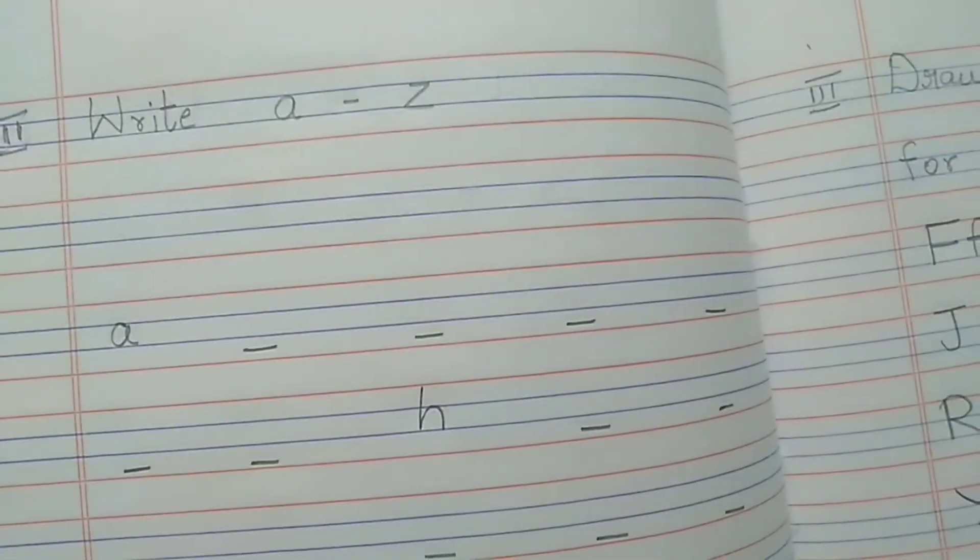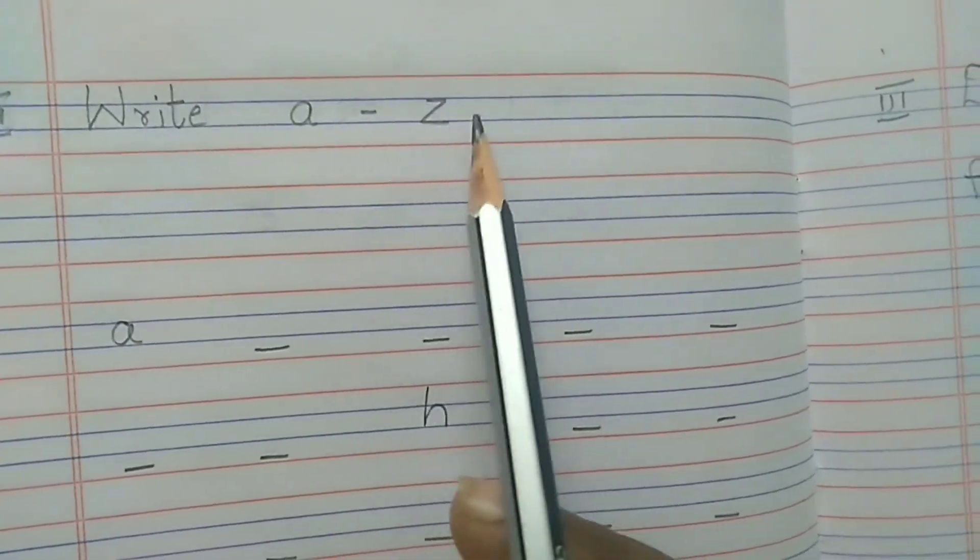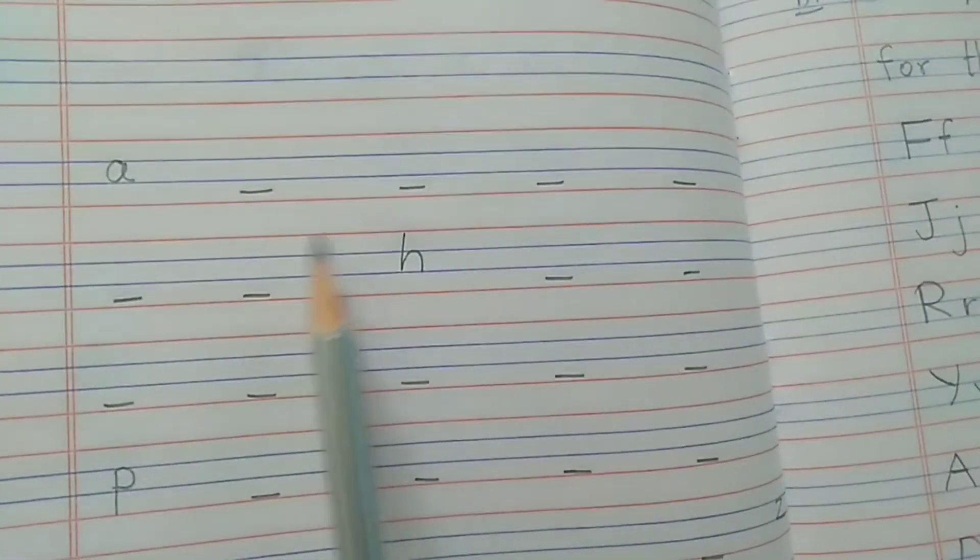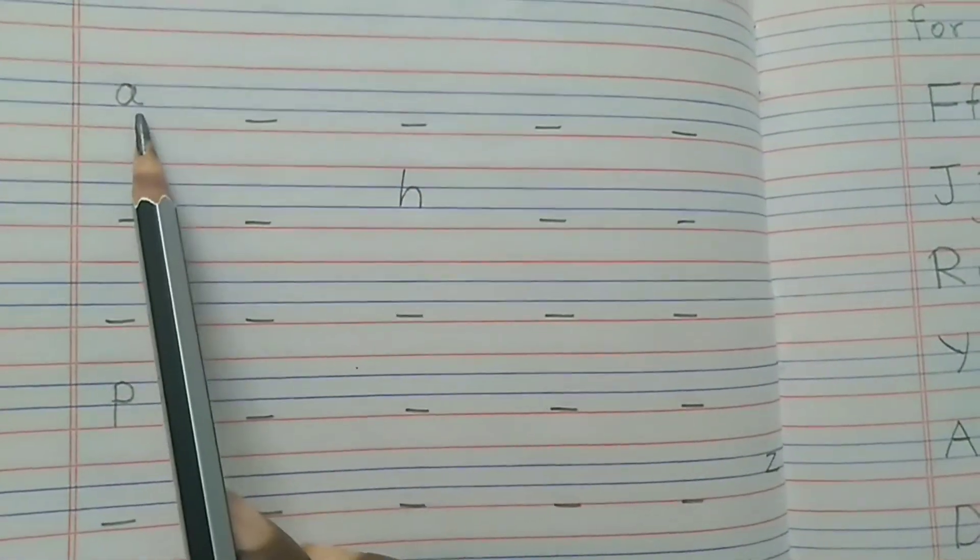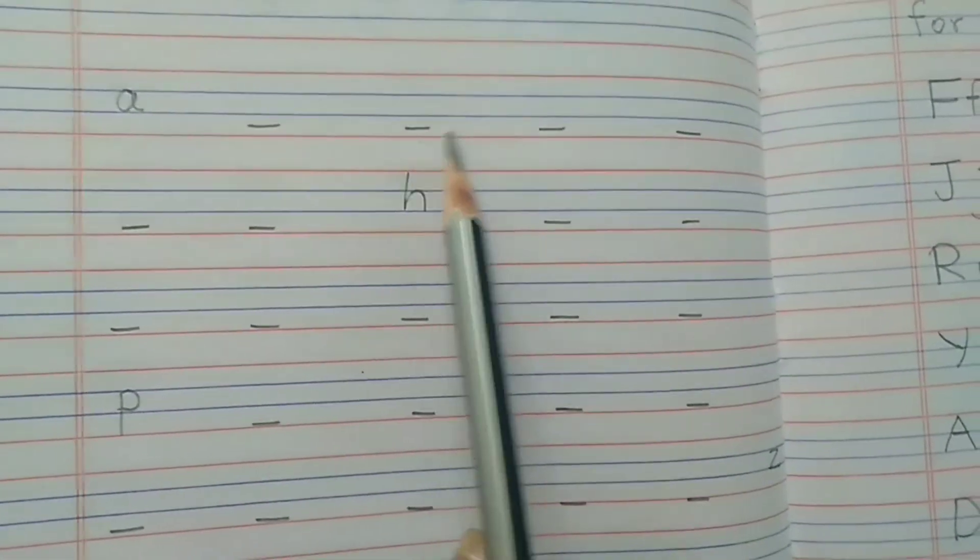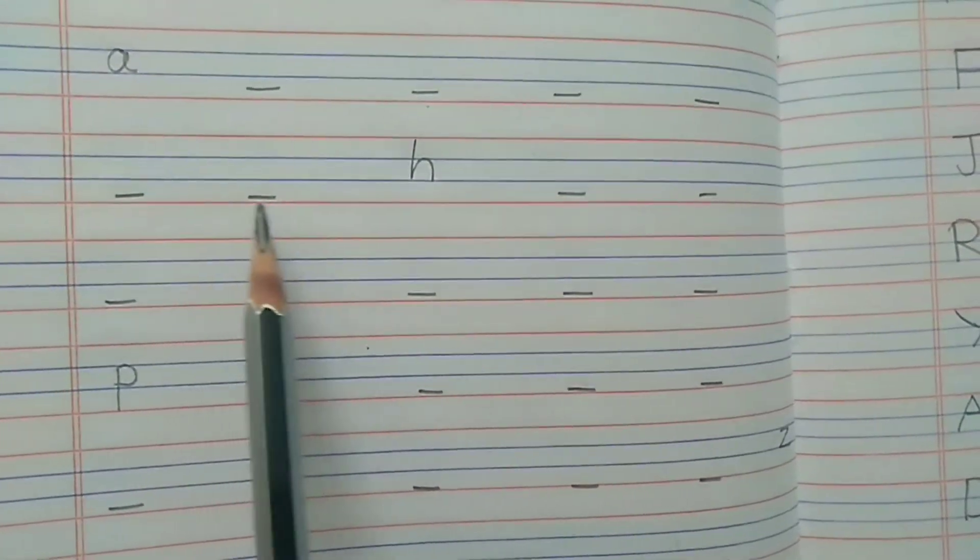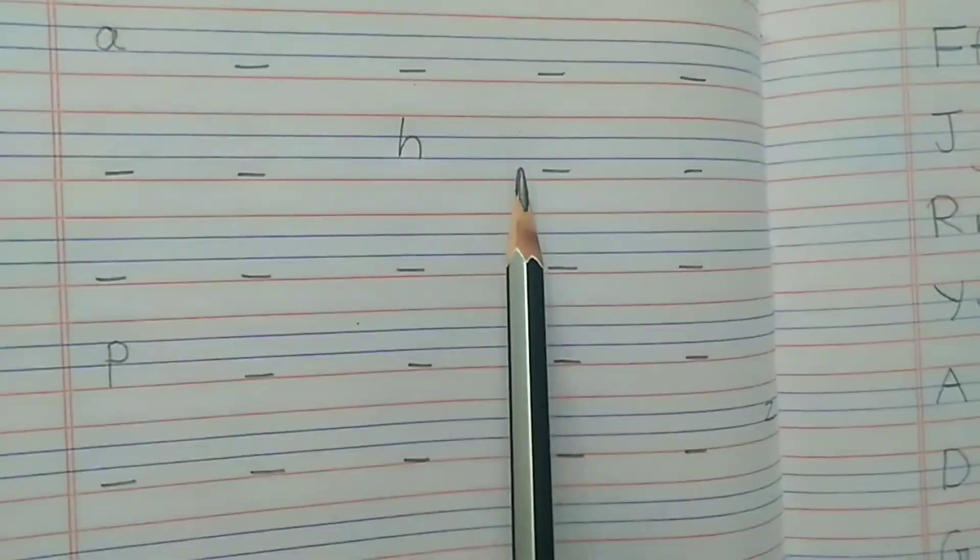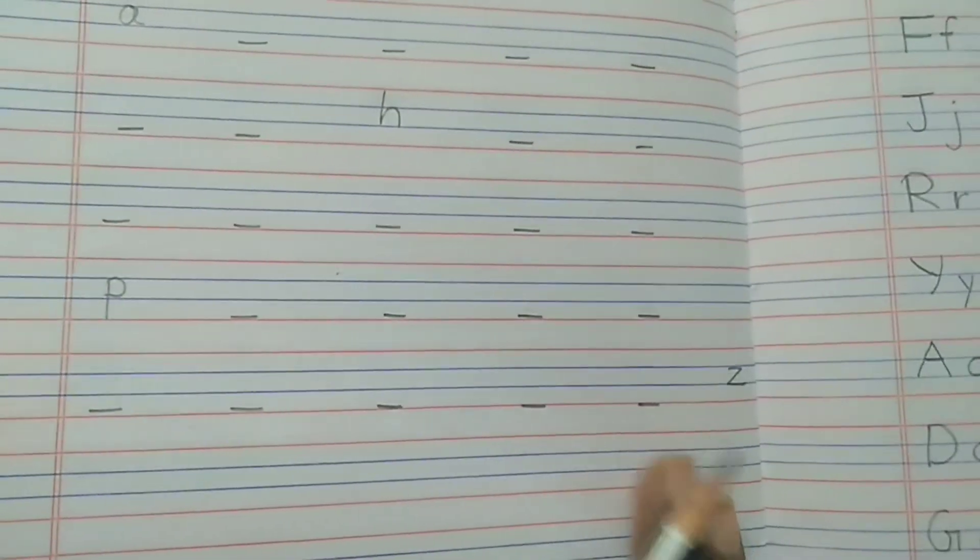Second main is write small a to small z. Here also same, only five letters in each line. Start with small a - a, b, c, d, e, and then f, g, h, i, j. Finish it here.